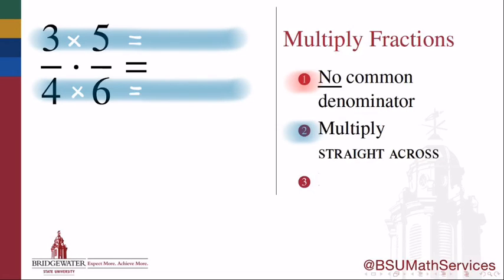So then what actually happens? We multiply, and when fractions multiply, the multiplication goes straight across the numerator and straight across the denominator. So the numerator of our product will be 3 times 5, which is 15. The denominator of our product is 4 times 6, which is 24. Now the multiplication step is finished.